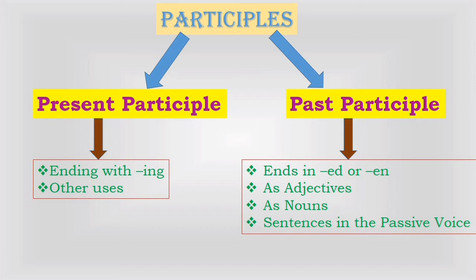The past participle normally ends in '-ed' or '-en', but many verbs have irregular past participles. It is used with forms of 'have' — like have, had, has, will have had — to form the perfect tenses of verbs. For example: I have written the books. The teacher had spoken to my parents. Past participles can also be used as adjectives — for example: cooked food should be consumed as soon as possible; the injured soldiers were taken to the hospital.